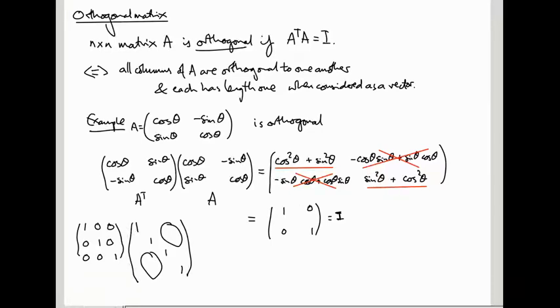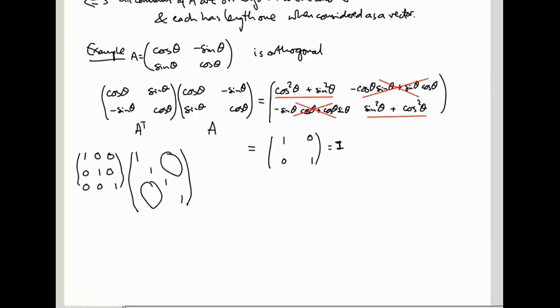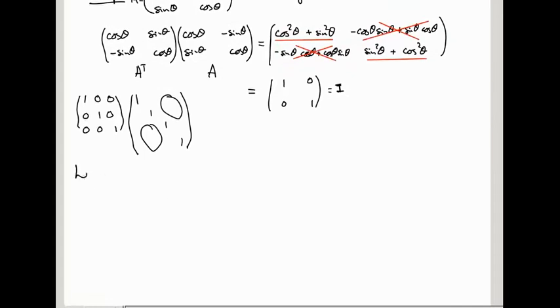Here's the nice fact about orthogonal matrices, this is why I've introduced them. If A is orthogonal, so if A transpose A is the identity, then the geometric transformation corresponding to A preserves dot products.